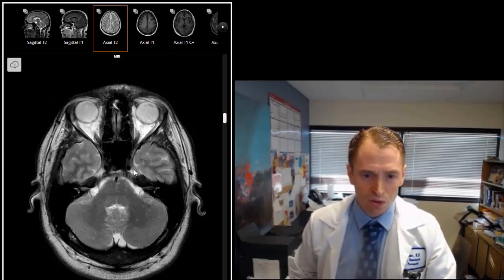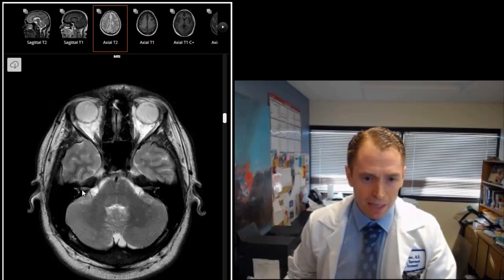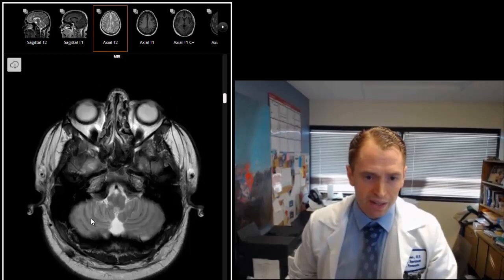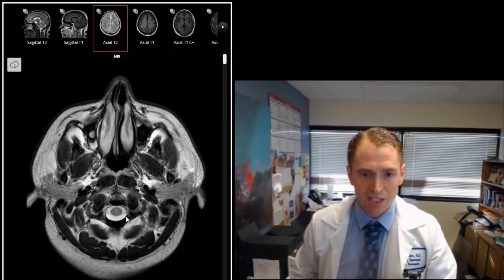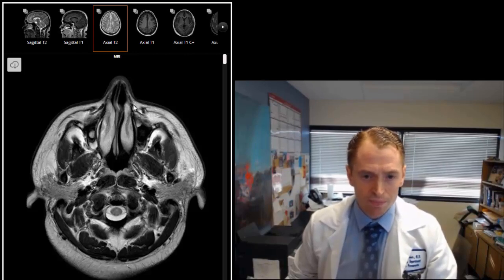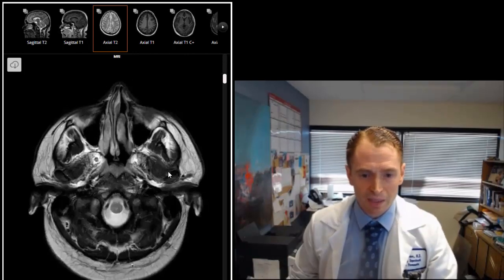These are the temporal lobes of the brain. This is the middle ear and you can sort of see the semicircular canals that control balance. This is the brain stem, this is the pons and the cerebellum, and this is the parotid gland, one of the salivary glands. We're very low here so this is sort of the top of the spinal cord. This is the nose and nasal septum, and you can see there's a little bit of a deviated nasal septum which is very common.